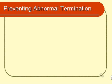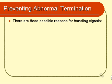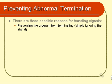So, why might you want to handle a signal? I can think of three possible reasons. The first is to prevent the program from terminating. You may not want to terminate the program upon receipt of a particular signal. It may be vitally important that your program keep running, and so you would want to make sure that all signals that could possibly be sent to your program are essentially ignored.